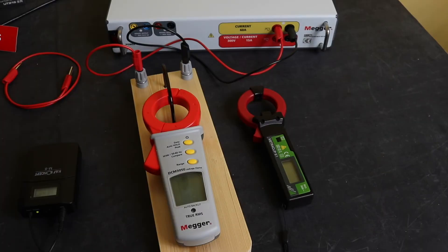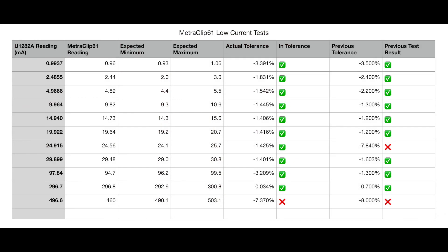Take a closer look at the MetroClip 61 test results now. The previous tolerance, you can see that the 25 milliamp was out of spec with a minus 7.8% tolerance. With this test setup, I've got an in-tolerance result, so that is a bit better. The very last result at 500 milliamps is still out of spec.